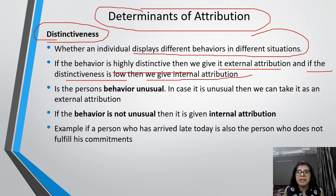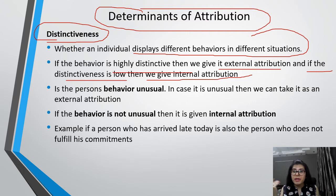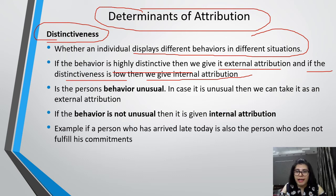If the behavior is highly distinctive, we give it an external attribution. For example, if a person is late today but is normally not late, then his behavior is highly distinctive — it is unusual. So we give it an external attribution, meaning the situation caused the behavior.